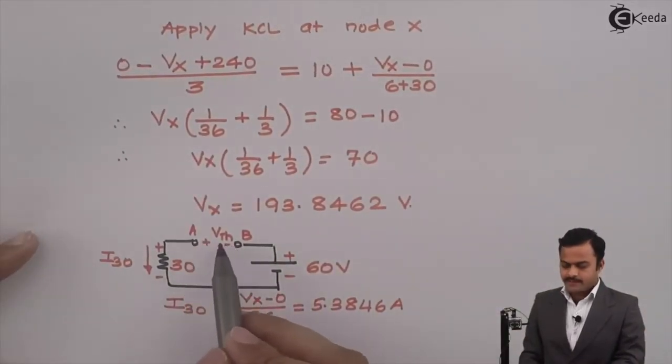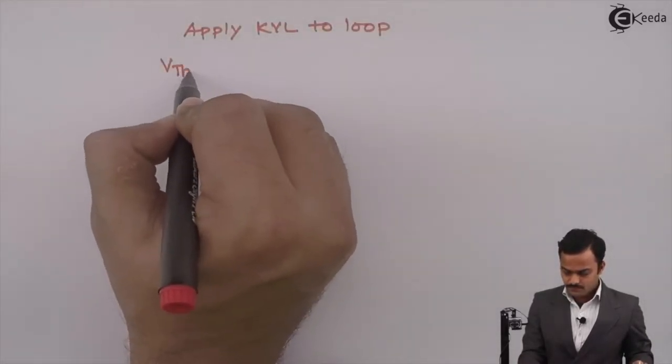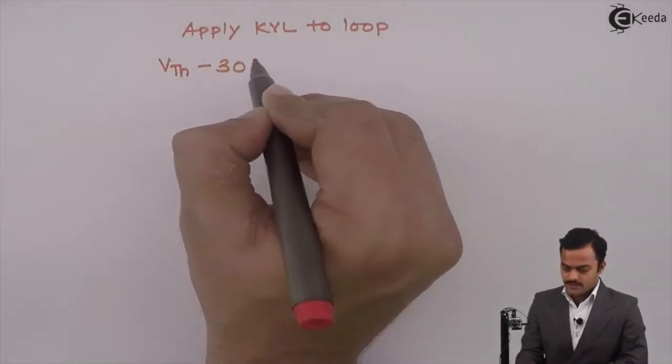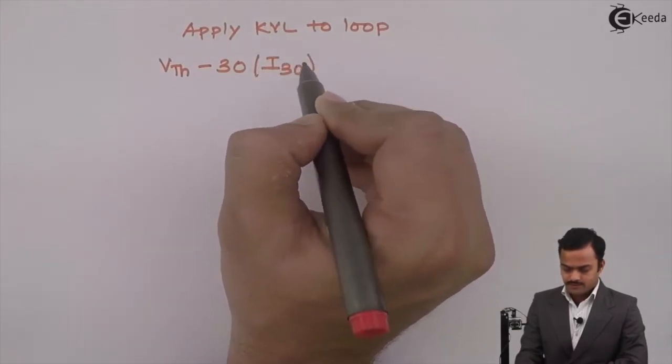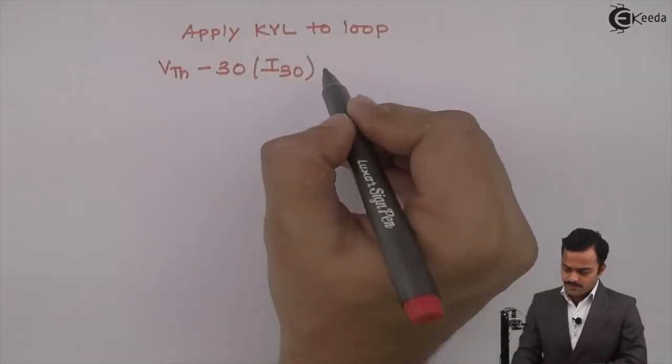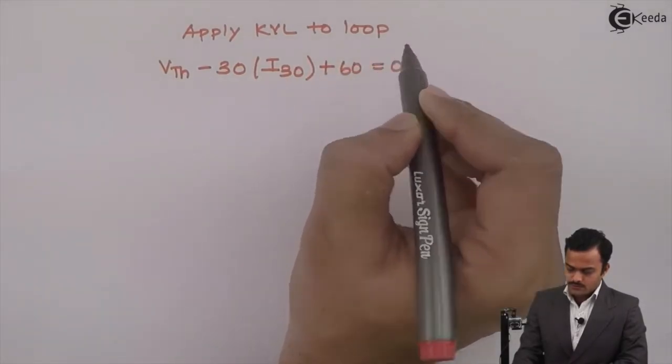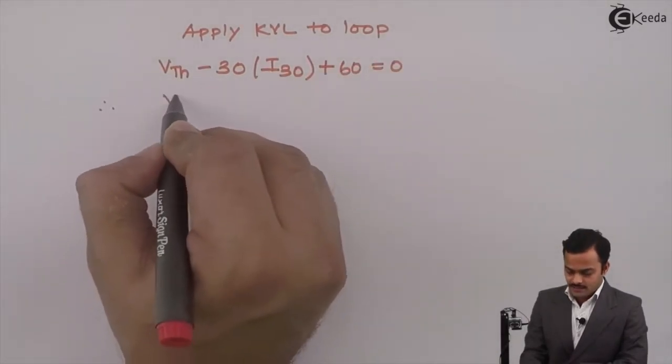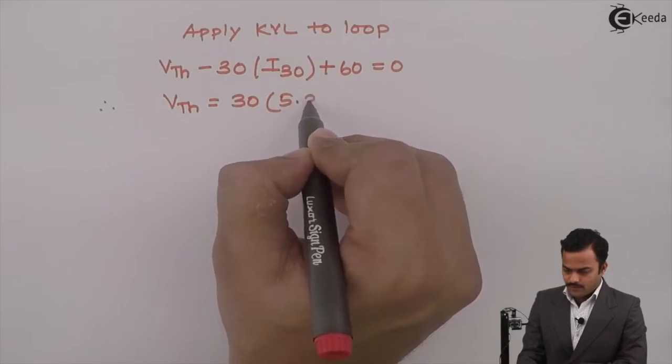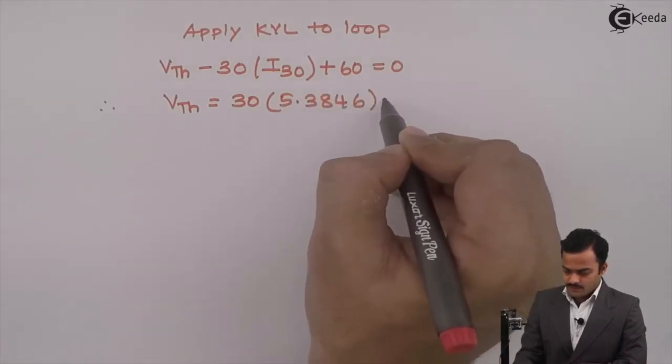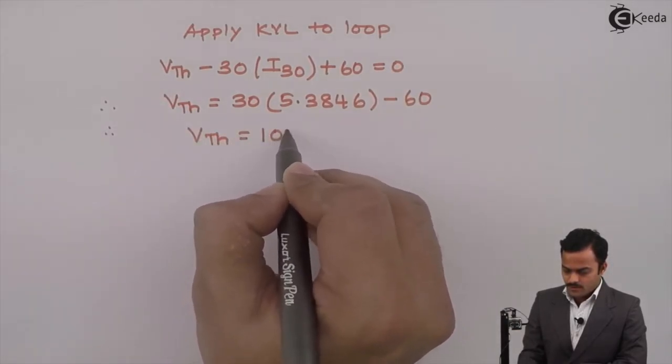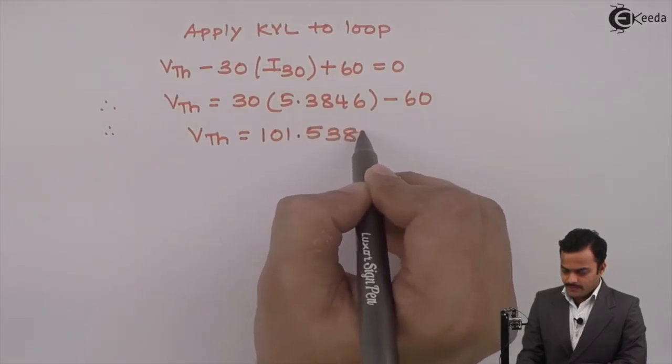Let us start from B point. From B to A, it is plus VTH. Then, for this, it is plus minus. Minus 30 is the resistance multiplied by I30 current flowing through it. And if I continue the same direction, it is minus plus which is plus 60 equal to 0. If I substitute I30, I will get VTH as 30 multiplied by 5.3846 minus 60 which is nothing but 101.5385 volt.